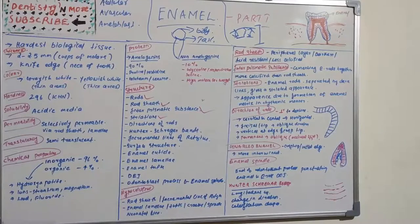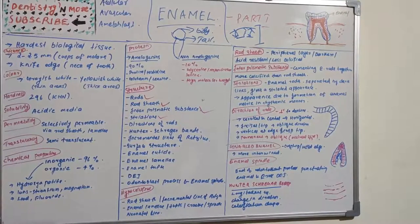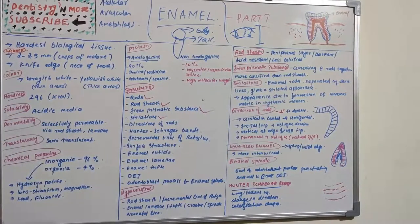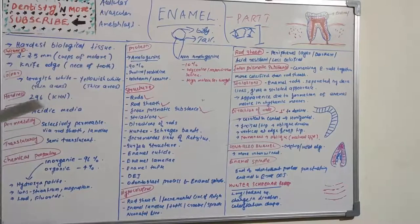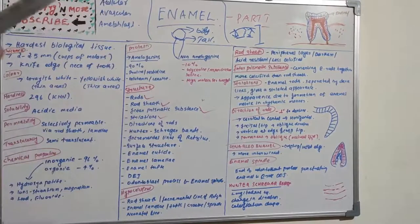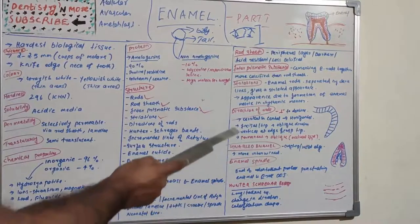Striations: enamel rods are built up of segments of uniform length of about 4 micrometers, separated by dark lines giving a striated appearance. They are more visible with the action of mild acids. This appearance is due to the rhythmic formation of enamel matrix — matrix is deposited layer by layer. Striations are more pronounced in hypocalcified areas.